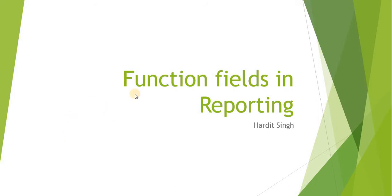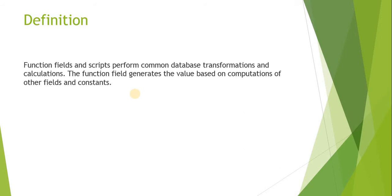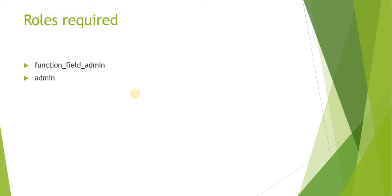First of all, the definition: function fields and scripts perform common database transformations and calculations. The functional field generates a value based on computations of other fields and constants. So if you want to display another column in your report and you want it to be calculated based on some formula or your own script, and you don't want that field or column to be stored in the database — just for reporting purposes — then you can use function fields. They are a very effective way to display values.